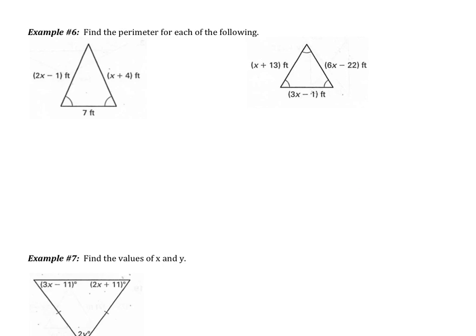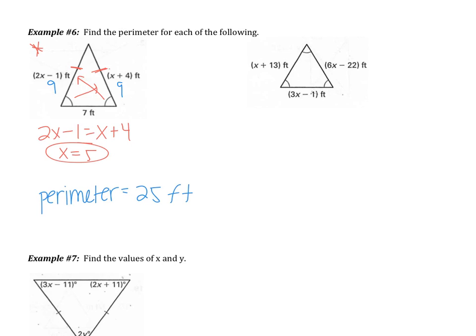For example number 6, you are asked to find the perimeter for each of the following. Pause the video, find x, and then find the perimeter. You should have noticed that this is an isosceles triangle, meaning the sides across from the congruent angles are going to be congruent. So you should have had 2x minus 1 equals x plus 4, giving x equals 5. Substituting in 5, you get each of the two legs to be 9 feet. The perimeter is 9 plus 9 plus 7, which is 25 feet. To find perimeter, you add up all the sides.